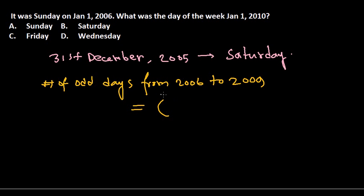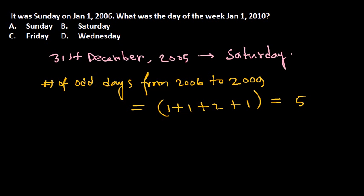The number of odd days from 2006 to 2009: 2006 is an ordinary year — one odd day. 2007 is also ordinary — one odd day. 2008 is a leap year — two odd days. 2009 is again an ordinary year — one odd day. So the total number of odd days is five.